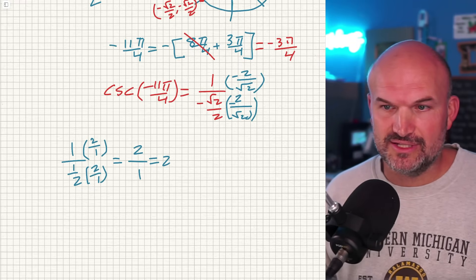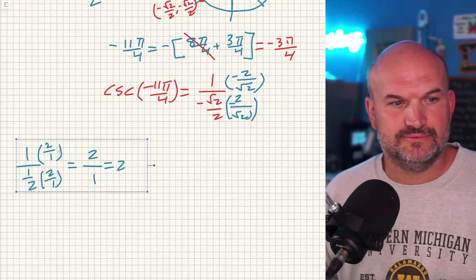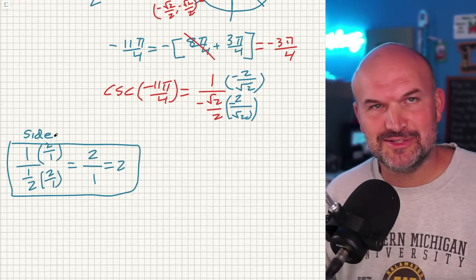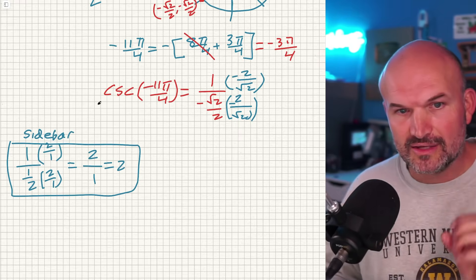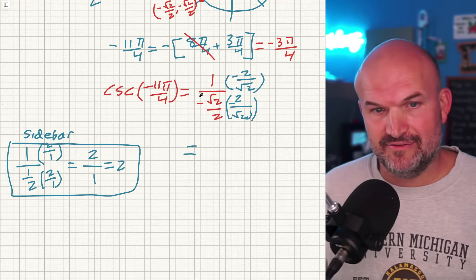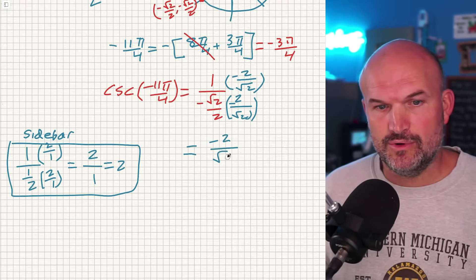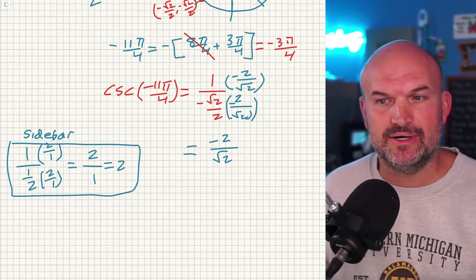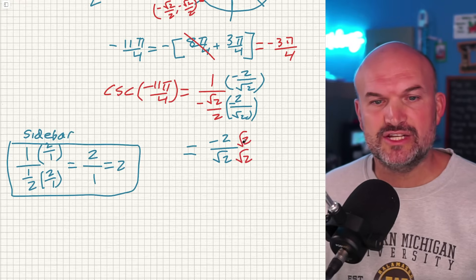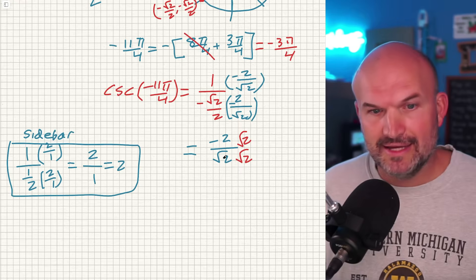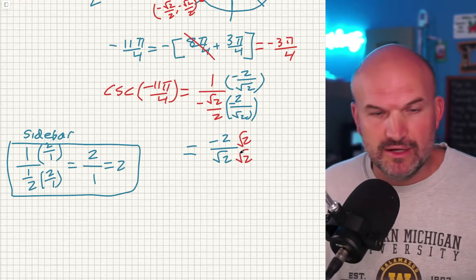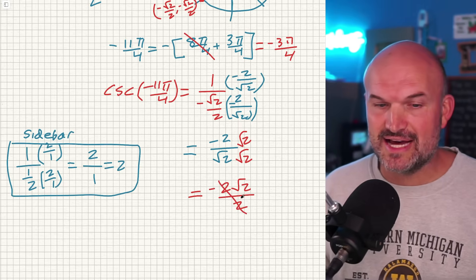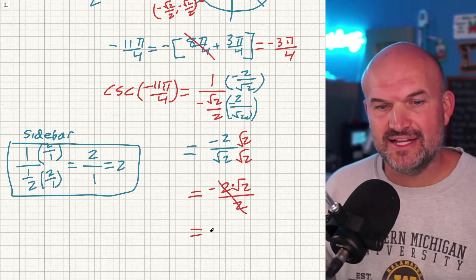Now we need to rationalize the denominator to eliminate the radical. Multiply by √2/√2: the denominator becomes √4 = 2, eliminating the radical. So we get -2√2/2, which simplifies by dividing out the 2s, giving a final answer of -√2. That is what the cosecant of -11π/4 equals.